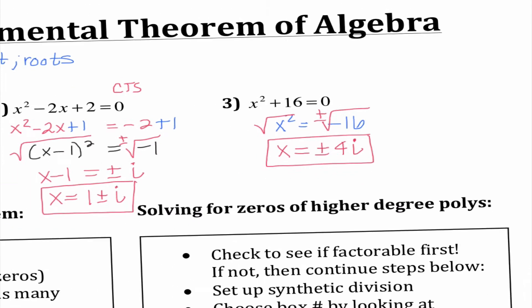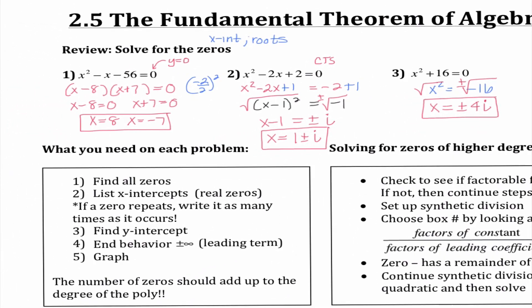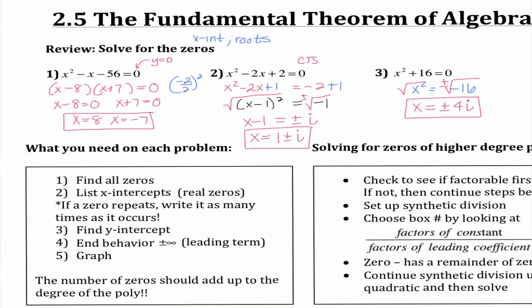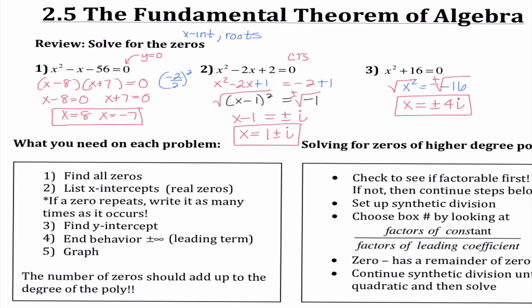If we look at all three of these, we notice all of them had two answers, and that makes sense because on all of them we had a degree of 2. We have learned that the degree matches the number of zeros we will find.